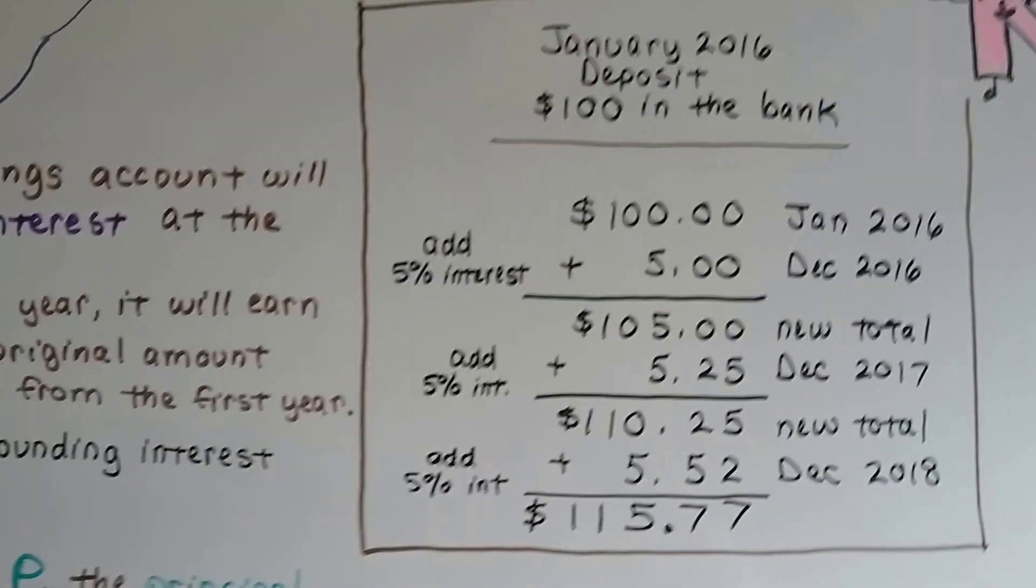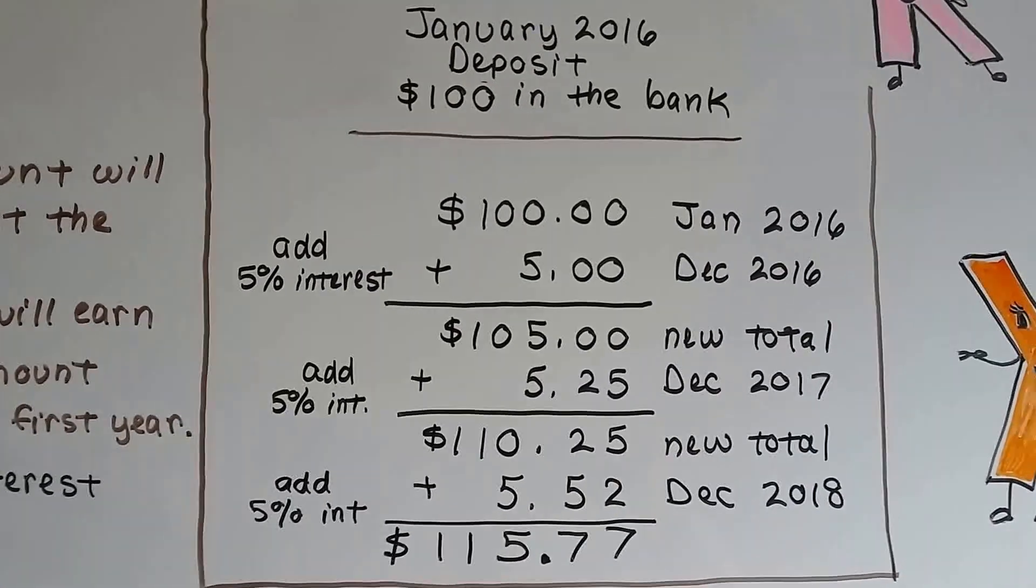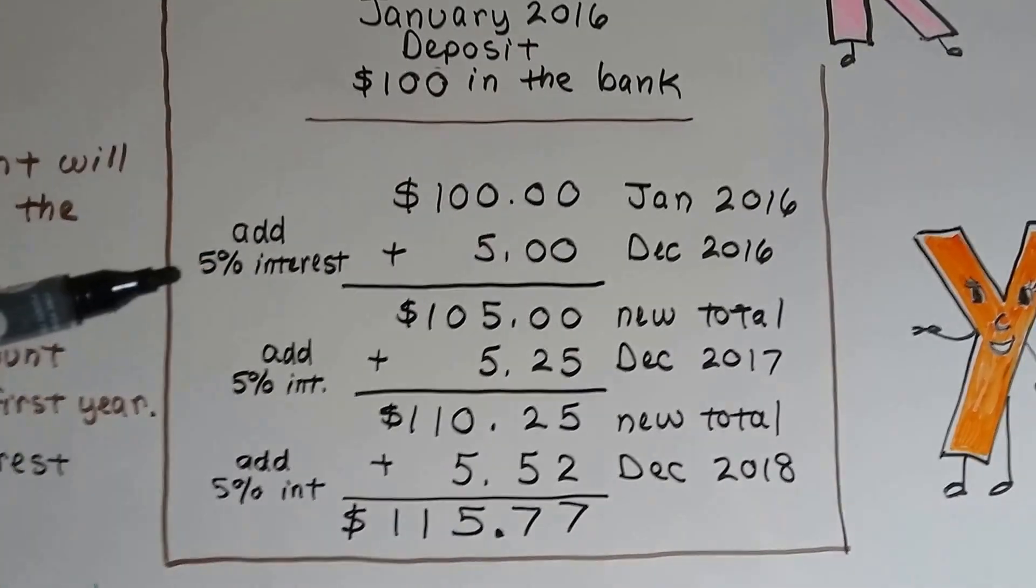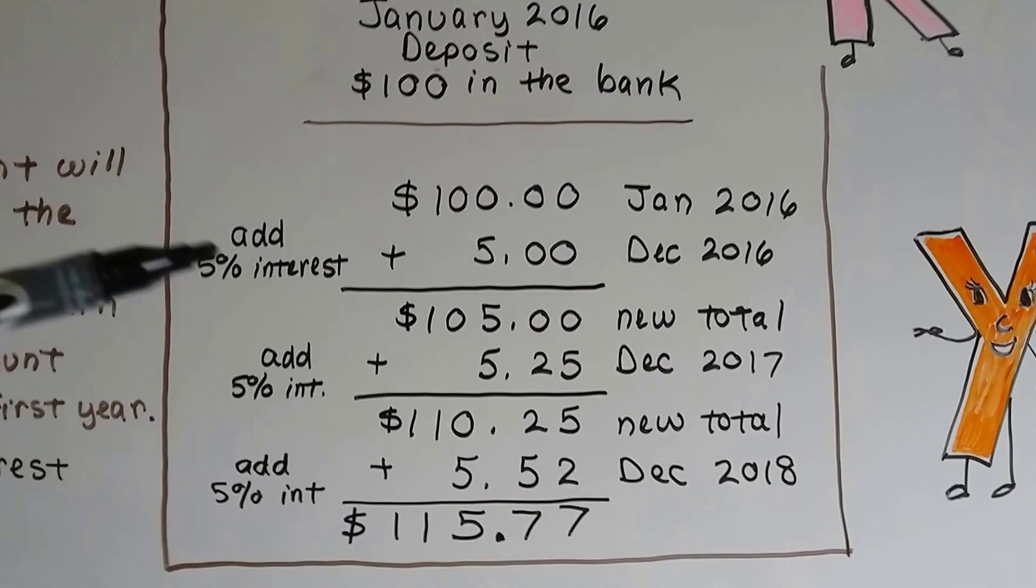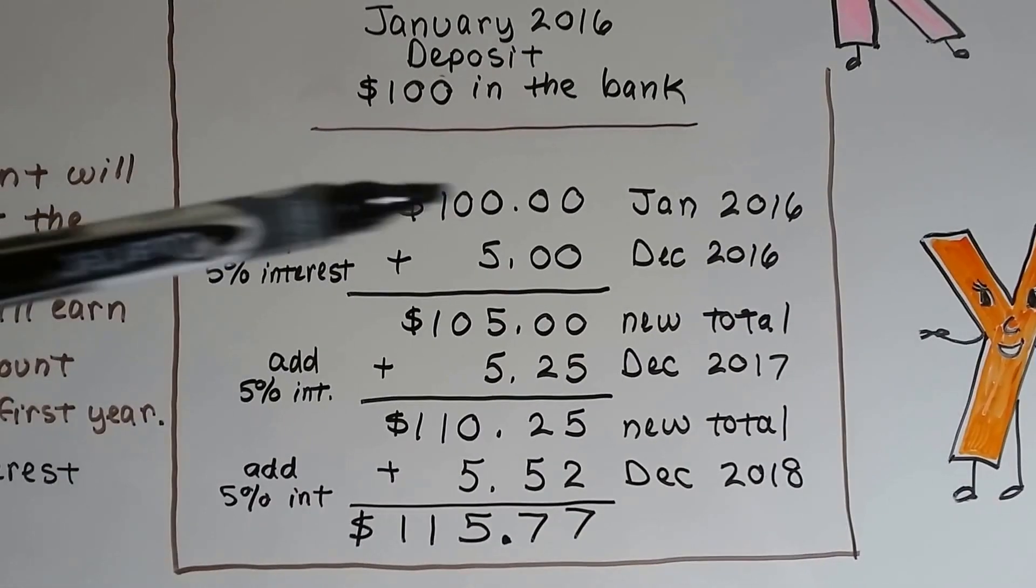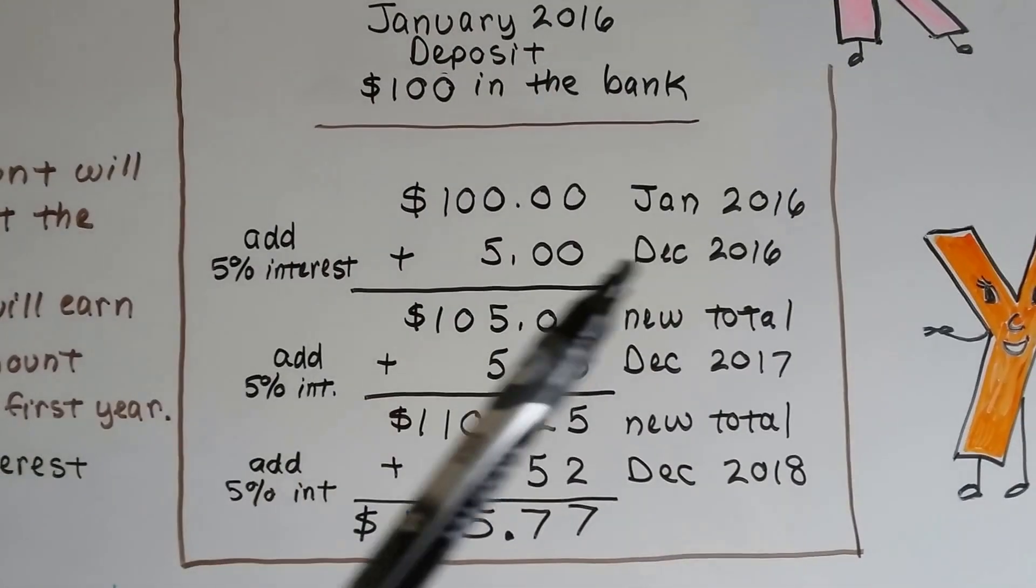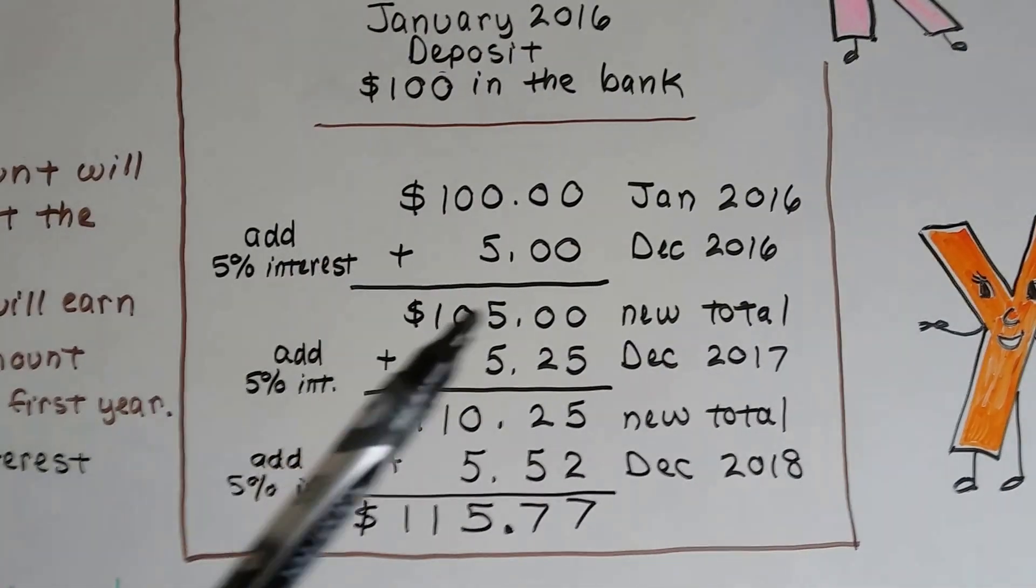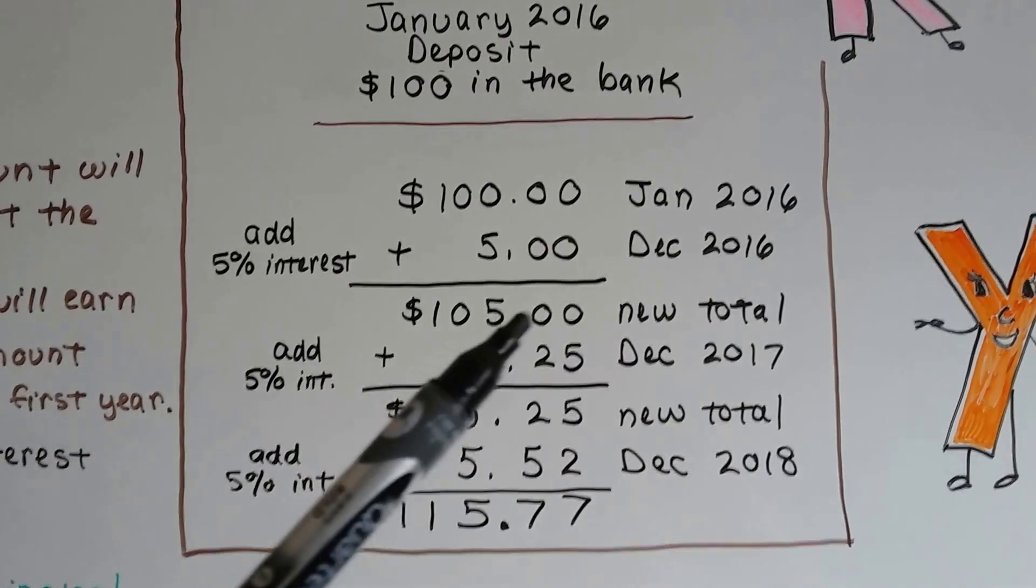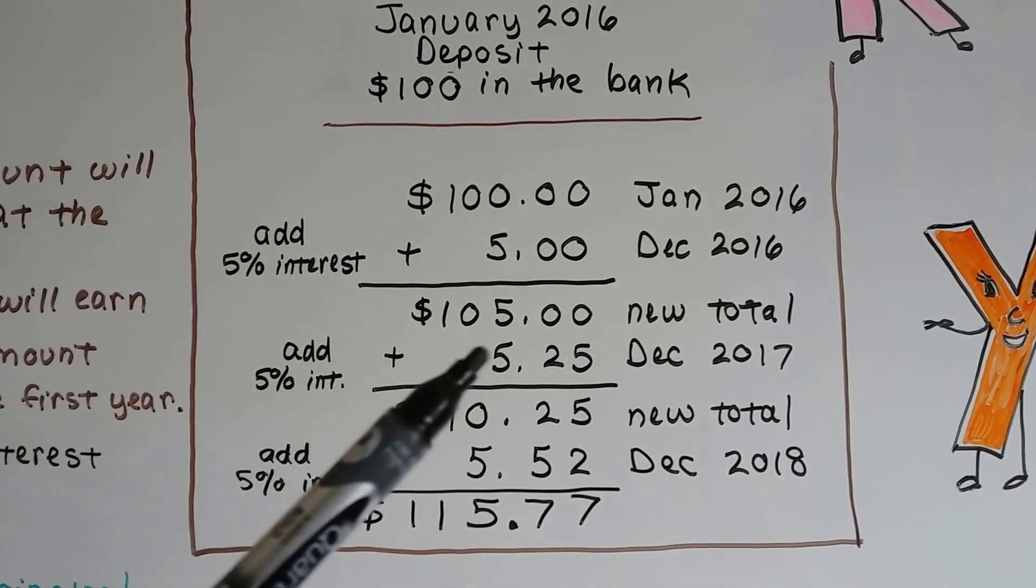Here's an example. I made a little table. If we deposit money January of 2016, $100 in the bank, what's going to happen is at the end of the year in December of 2016, if it's 5% interest, that's kind of a high interest rate for a savings account, but 105 are easy to multiply. You would get $5 in December, and it would add to your balance, so you'd have $105.